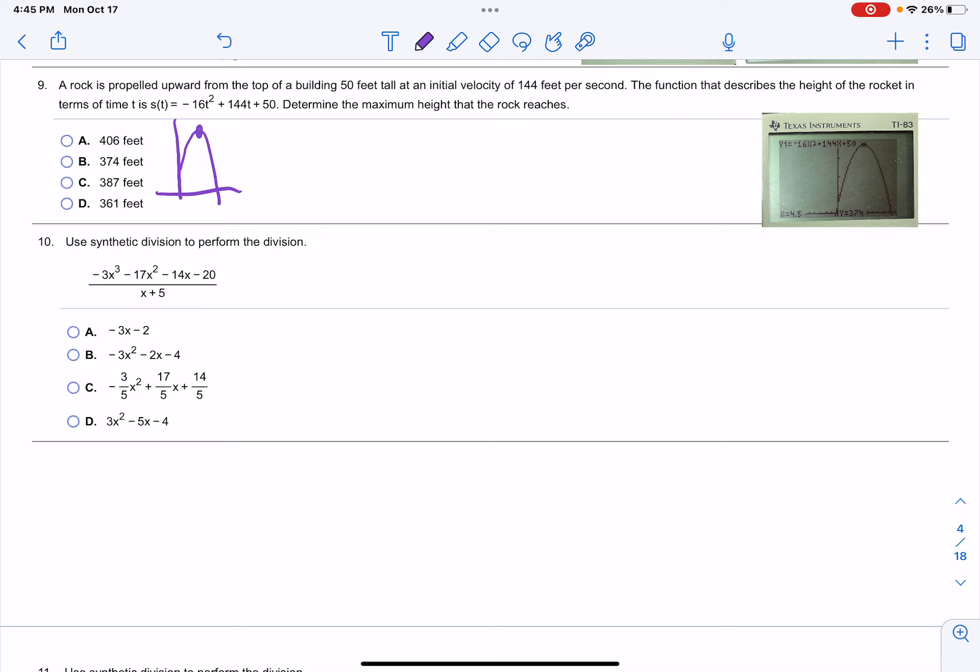The vertex is found on a parabola in the form of ax squared plus bx plus c, where h is negative b over 2a, and k is the value of the height at h seconds. The vertex is located at (h, k).